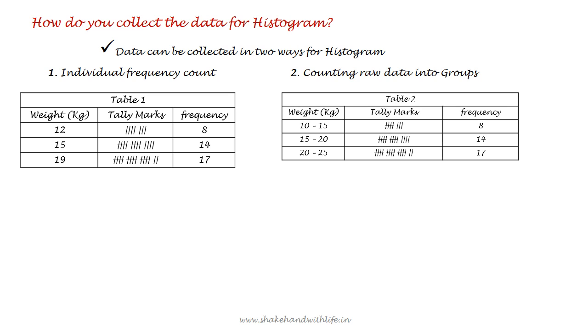The second method is counting raw data into groups or class intervals. When there are a very large number of observations, the data values are divided into class intervals of equal width, and the width of every class interval is the difference of the upper limit and lower limit of the class interval, as shown in Table 2.